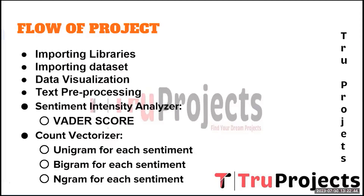The next step is Unigram for each sentiment. Unigram refers to the simplest form of feature extraction, where each word in the text is considered as a single entity. In this approach, individual words from the reviews are treated as separate features. For example, if a review contains the words 'excellent' and 'service', each will be treated as separate unigram features. The sentiment analysis model trained on unigram features will predict the sentiment intensity for each unigram present in the review.